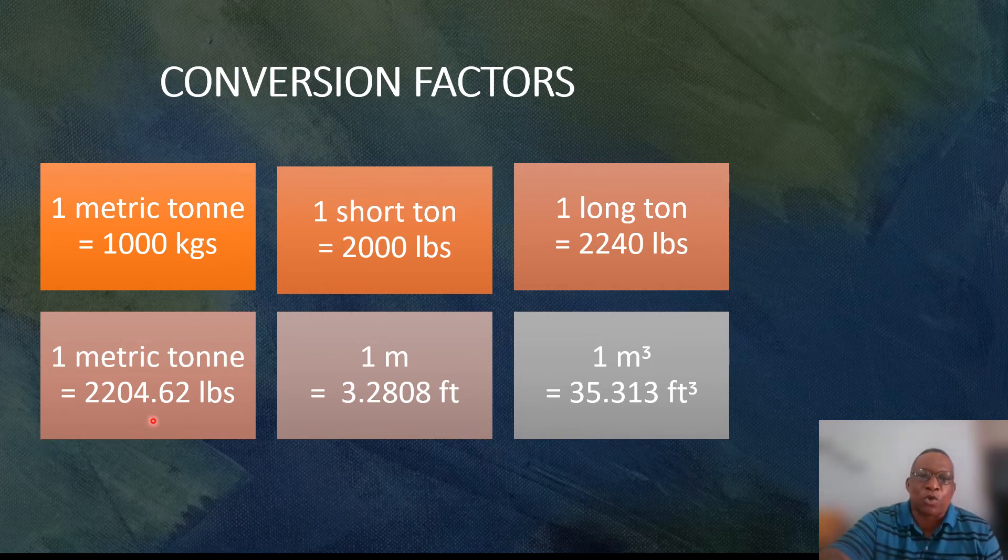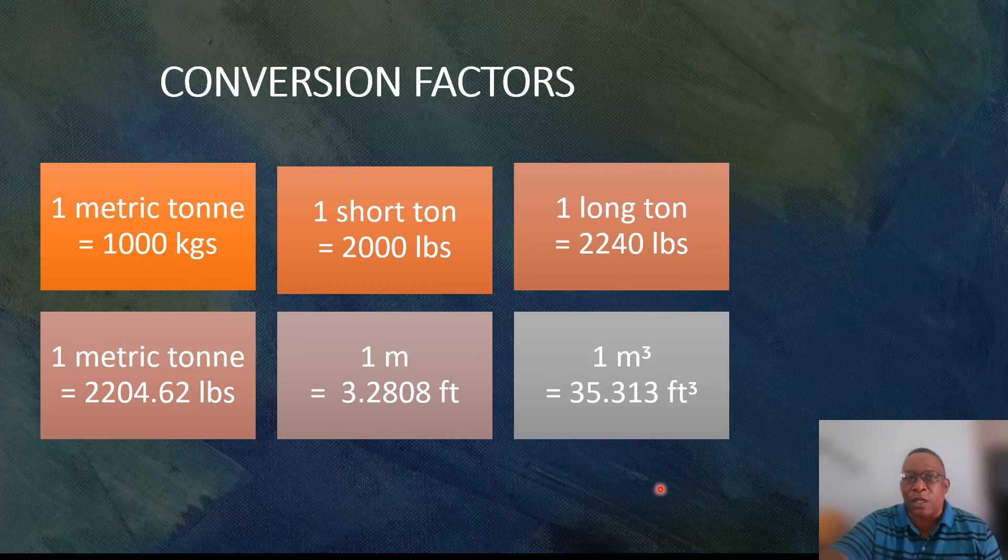Then we have one metric ton in terms of pounds is equal to 2,204.62 pounds. We have one meter which is equal to 3.2808 feet, and one cubic meter which is 35.313 cubic feet. Now throughout our exercises, we will be using some of these factors interchangeably.